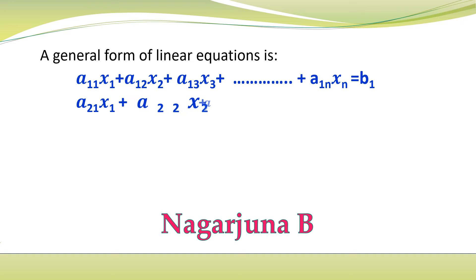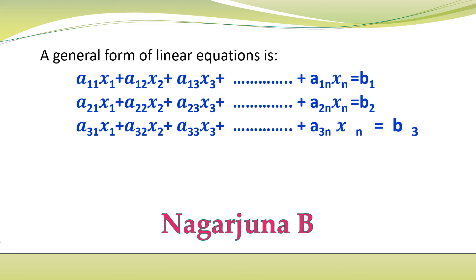a31x1 plus a32x2 plus a33x3 plus etc., up to a3nxn is equal to b3. So this is a general form of linear equation consisting of n unknowns and m equations.